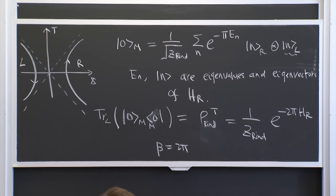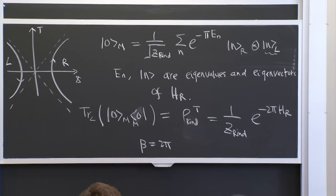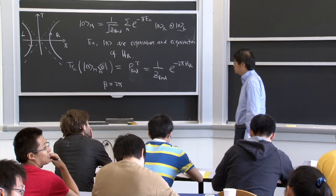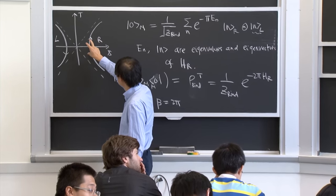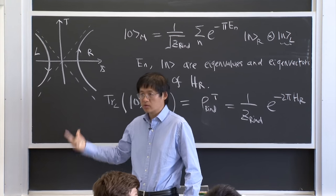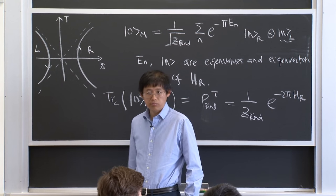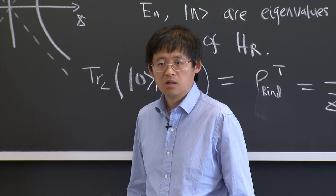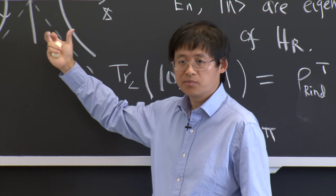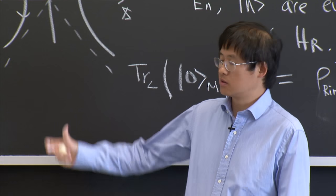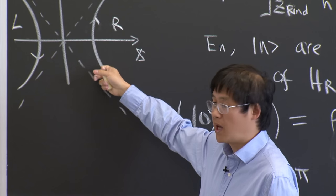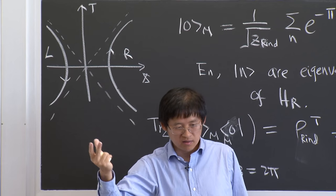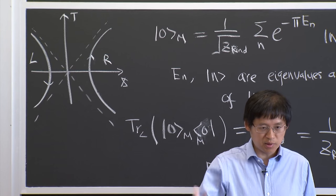Q: Is there any physical meaning to the left patch? A: It has the same physical meaning as the right patch. For the observer in the right patch, you don't see the left patch, and that's why you get the thermal density — that's why you have to integrate them out. They play a very important physical role. This is just pure Minkowski space. This kind of observer can only observe the right patch, so they must integrate out all the physics in the left patch, and that's why they see thermal physics.